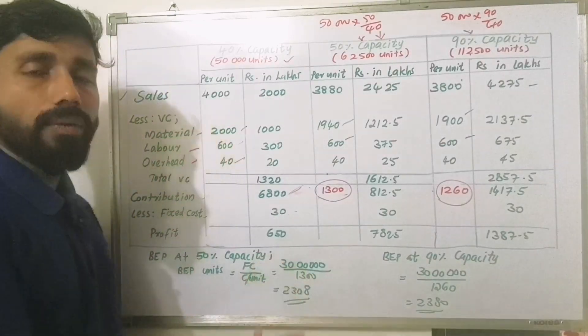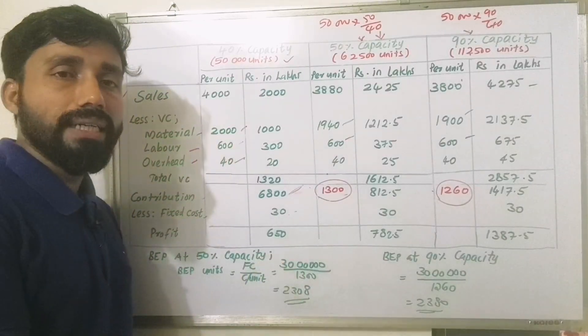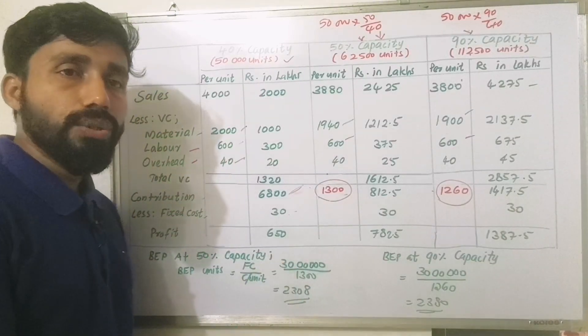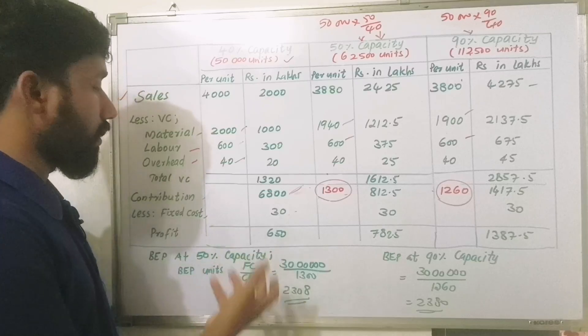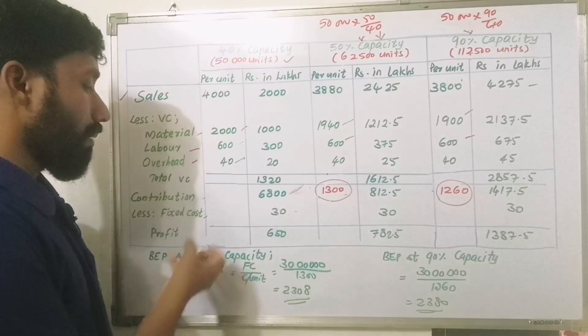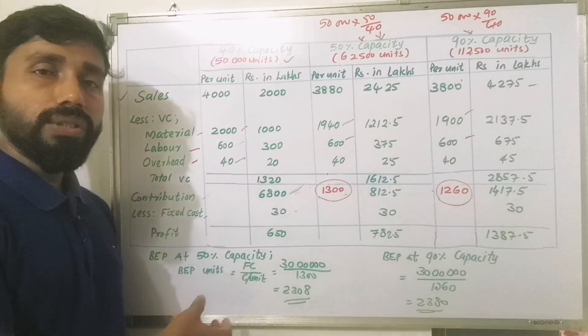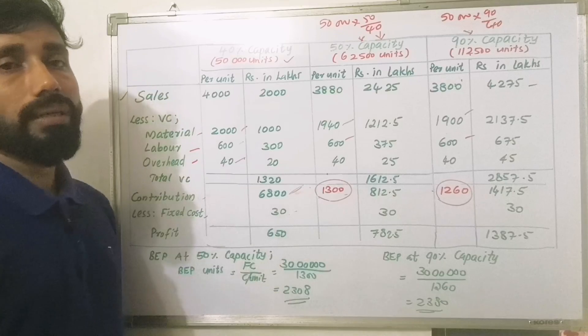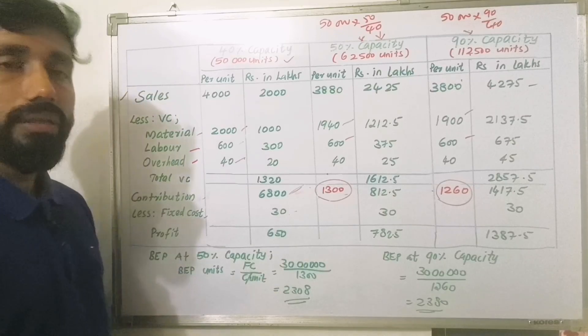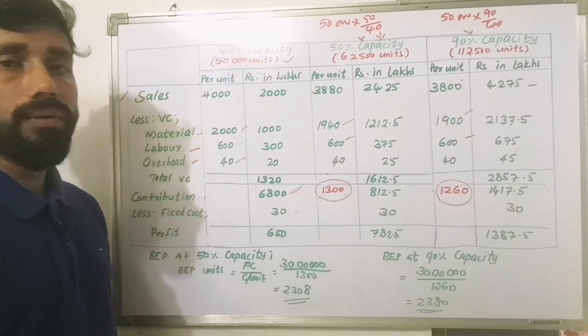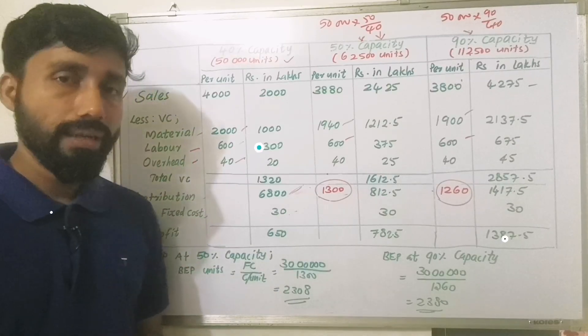We calculate BEP units and PV ratio BEP. BEP sales value is calculated as fixed cost divided by contribution into sales. We calculate the final figures accordingly.